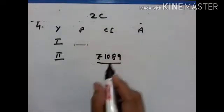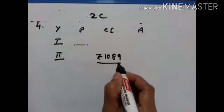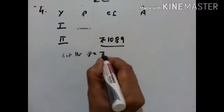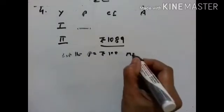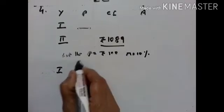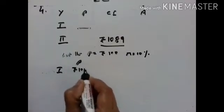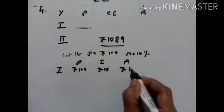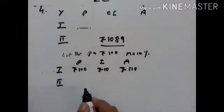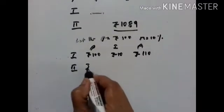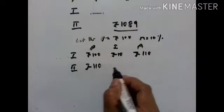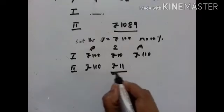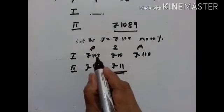Next, we have to find the sum. This is the compound interest of the second year. Let the sum be Rs. 100. Rate is equal to 10%. In the first year, the principal is 100, interest is equal to 10, so the amount becomes Rs. 110. This becomes the principal for the second year. So interest is equal to 10% of 110, that is Rs. 11. Now the compound interest for the second year is Rs. 11.